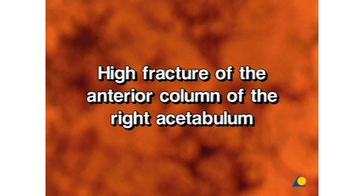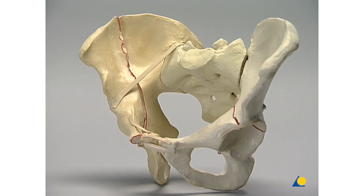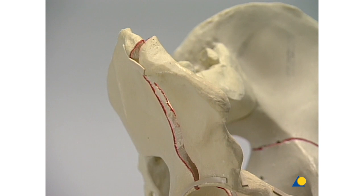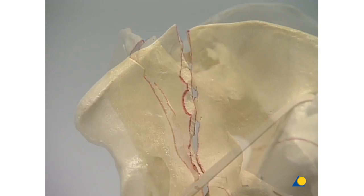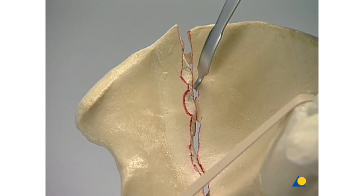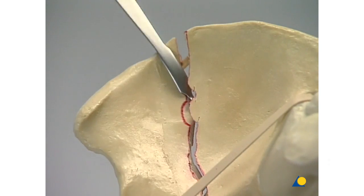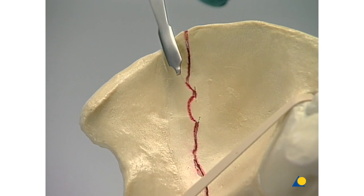High fracture of the anterior column of the right acetabulum. There is dislocation in the region of the iliac crest, with the main fragments piled on top of each other like roof tiles. The tip of the retractor is moved along the inside of the ilium and guided through the fracture to the lateral side of the ventral fragment. By turning the retractor 180 degrees, the stable fragment on the posterior side is reached. The retractor is then tilted in the ventral direction; the convexity of the retractor pushes the ventral fragment into the correct position.